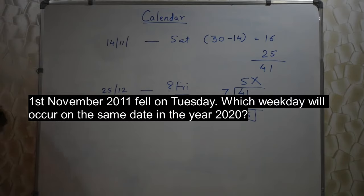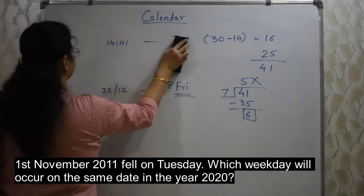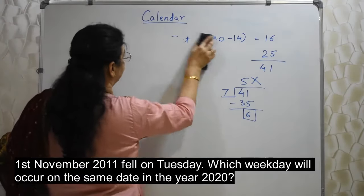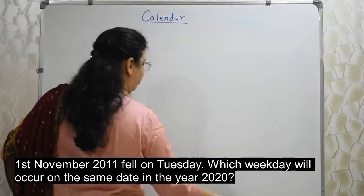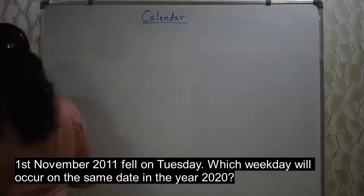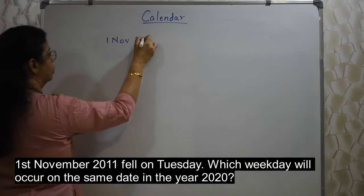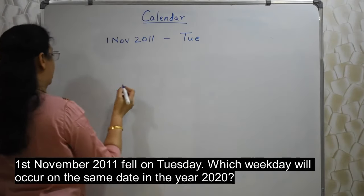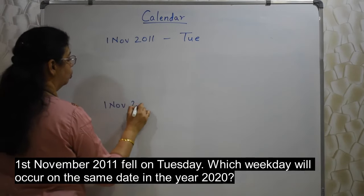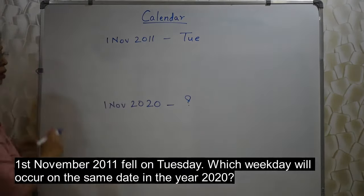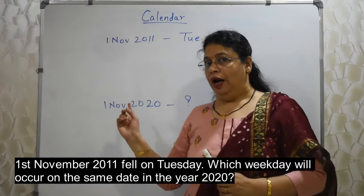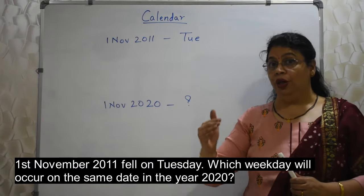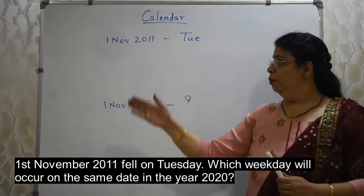Next question: 1st November 2011 fell on Tuesday. Which weekday will occur on the same date in the year 2020? We are now in 2020, but don't go and check a calendar — we need to know how to solve it. The trick is to jump year by year rather than counting all 365 or 366 days each year.